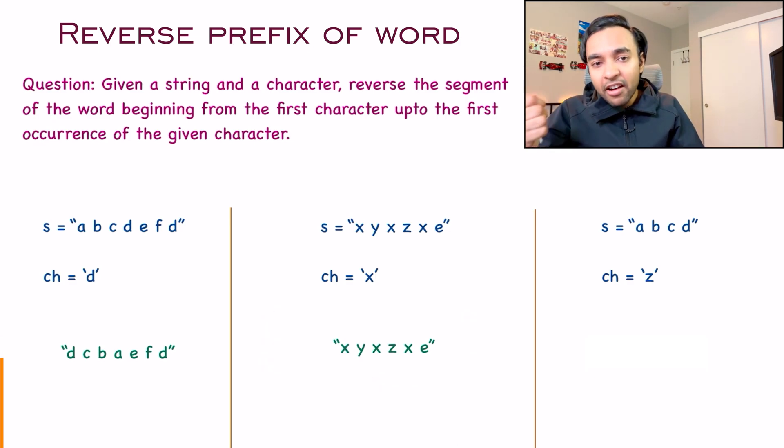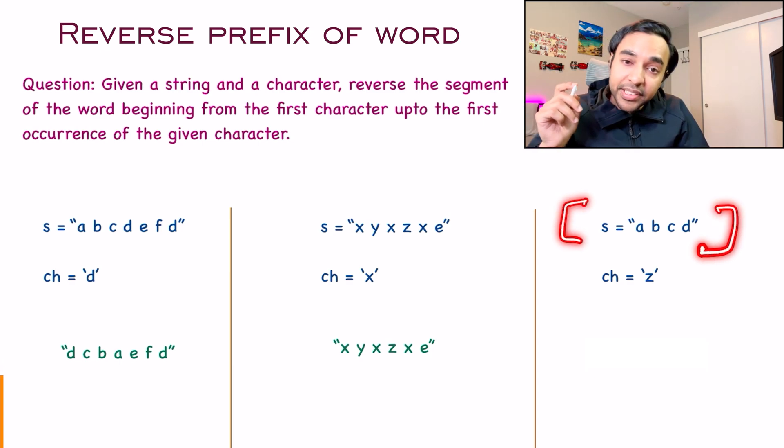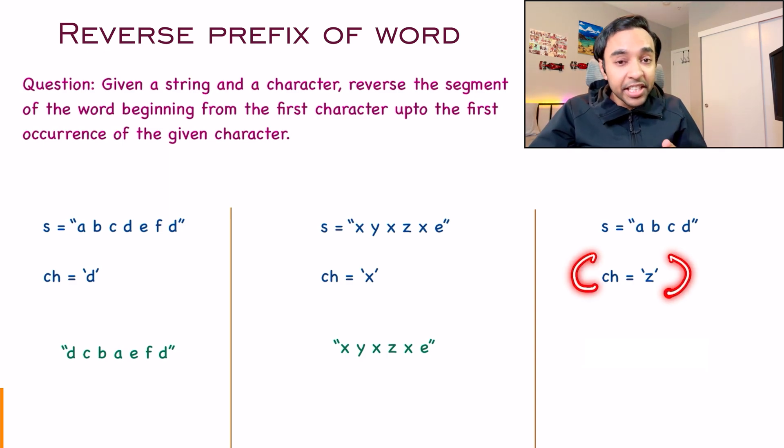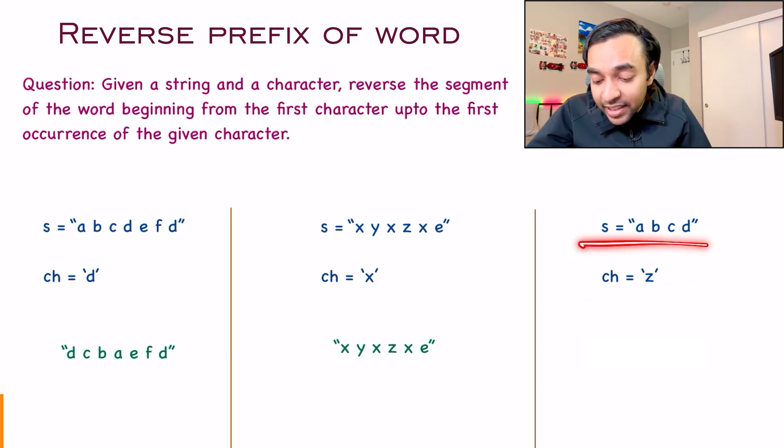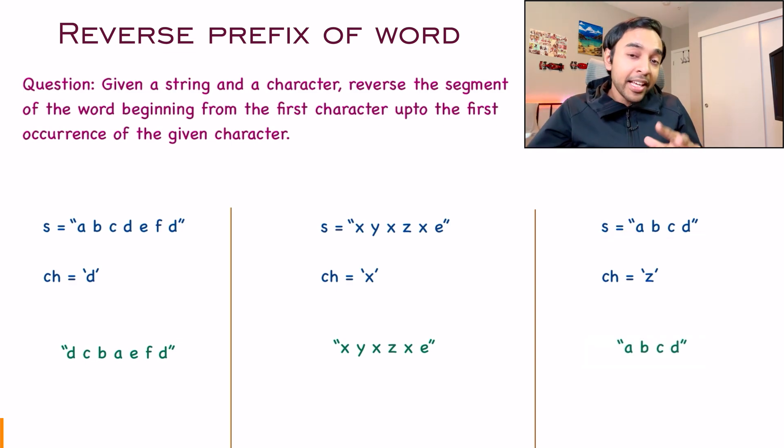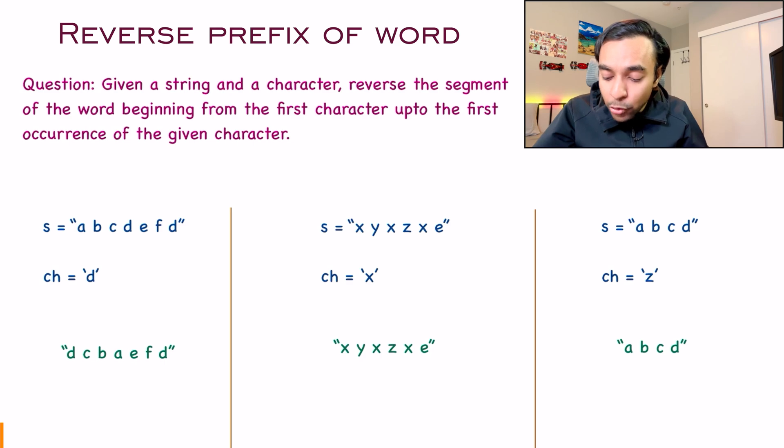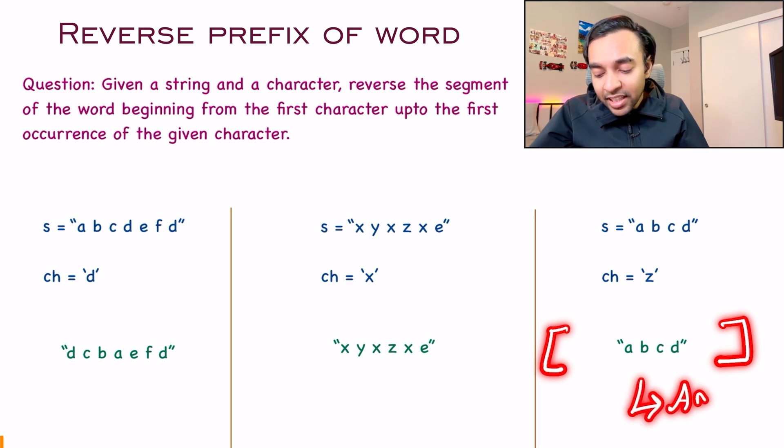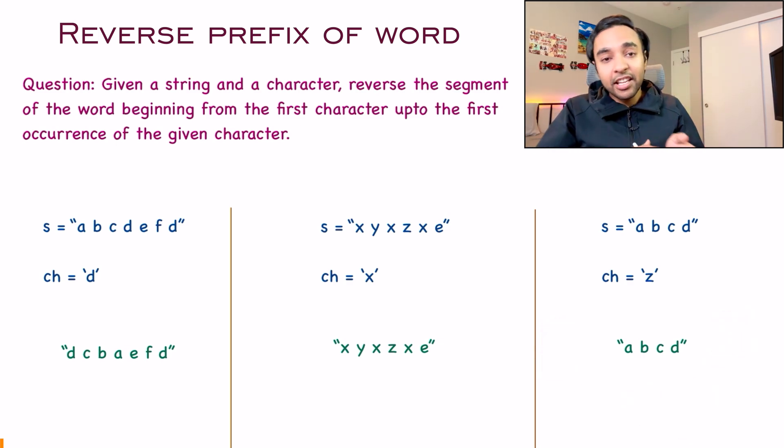Similarly, you can have one more edge case. For example, in my third test case, I have the string abcd, but the character that is requested is z. Now, z does not occur anywhere in the string. So you cannot find it. This does not mean that you will reverse the entire string. In fact, as per this problem statement, you need to leave your string unchanged. Because there was no z, for this particular test case, this same string once again will be your answer.